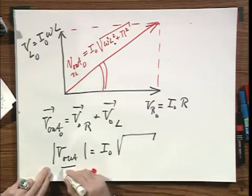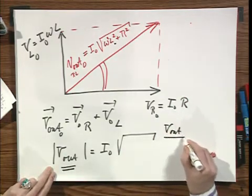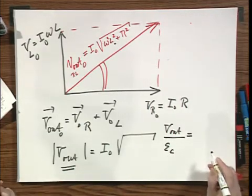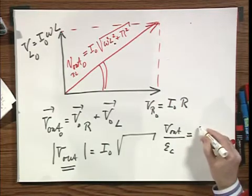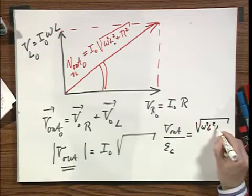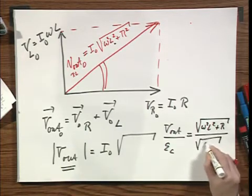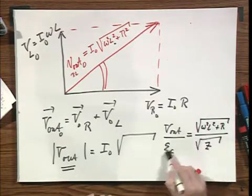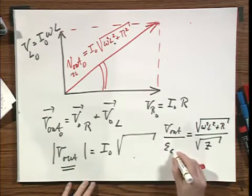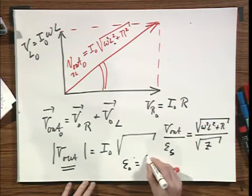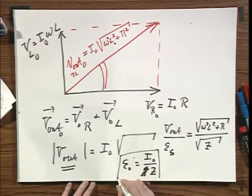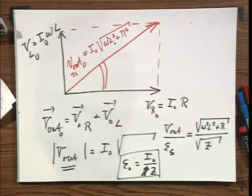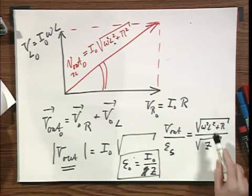And so if you want to know now what the ratio is of V out over E_S, well, they have the I zero in common. So you would get then that you find here the square root of omega L squared plus R divided by the square root of Z. I think you will have no difficulties finding this because this is E_S. Because E zero, that's the amplitude of the driver equals I zero divided by Z. That's the definition of Z. And so this shouldn't be too hard. I think I'll leave you alone with this. Because now that you have this, well, I think you are very, very well on your way.